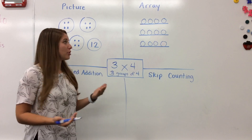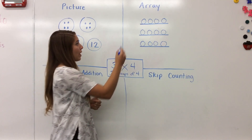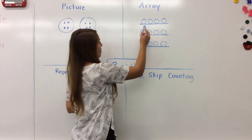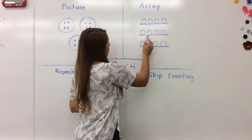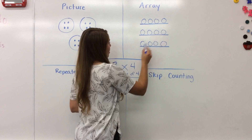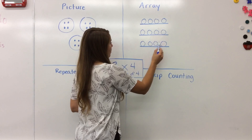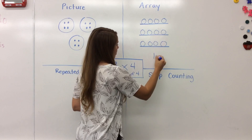To find my total amount, I just need to count them up: one, two, three, four, five, six, seven, eight, nine, ten, eleven, twelve.